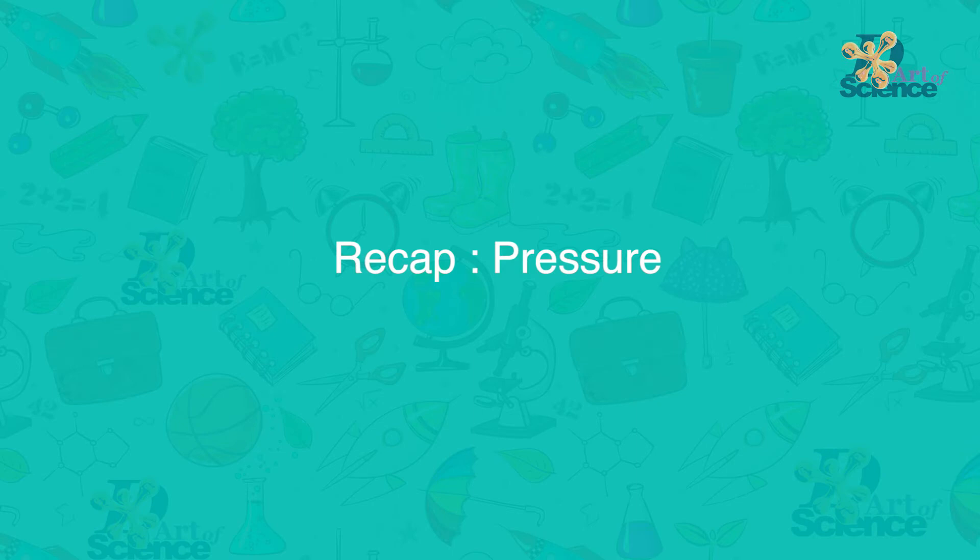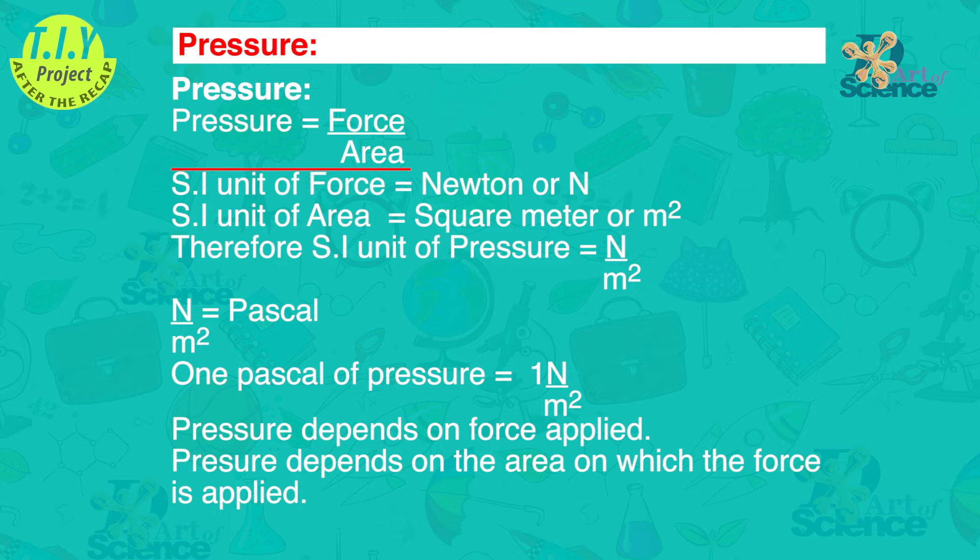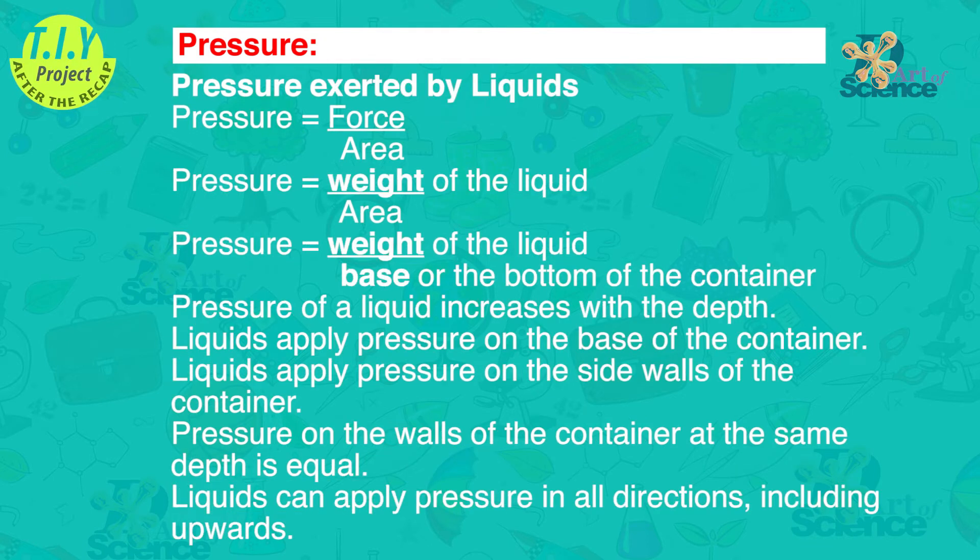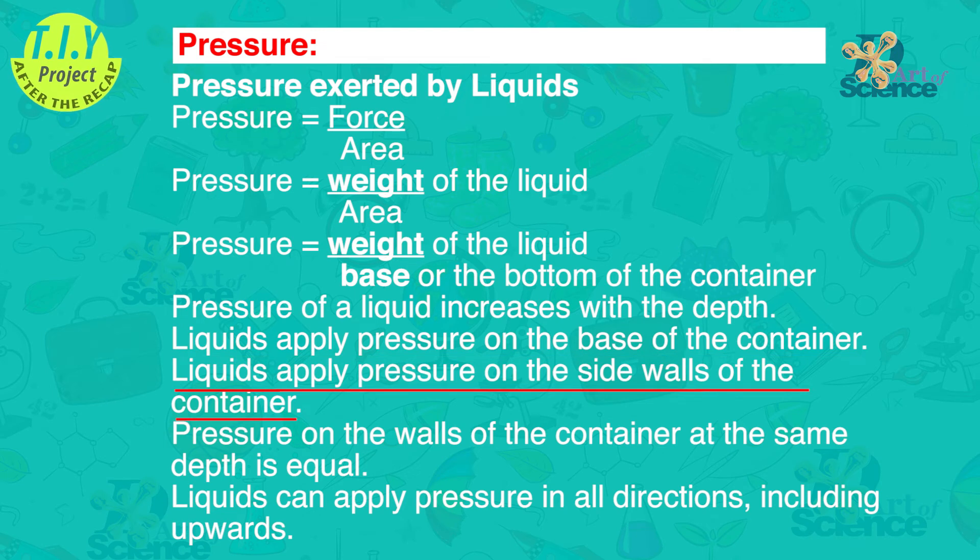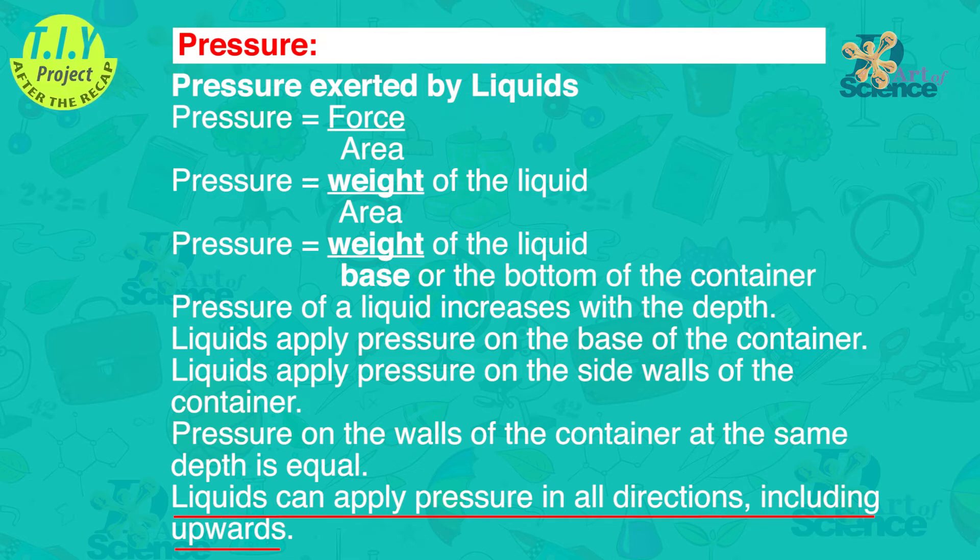That's all on the lesson on pressure in solids and liquids. Let's do a quick recap before we move on to the DIY that you can do as a school project. We learned that pressure is force upon area. The SI unit of force is Newton. The SI unit of area is square meter. Therefore the SI unit of pressure is Newton per square meter. This is also called pascal. One pascal of pressure is one Newton per square meter. The pressure depends on force applied. The pressure depends also on the area on which the force is applied. Pressure exerted by liquids. Pressure is force upon area. Force here is weight of the liquid and the area is the base or the bottom of the container. Pressure of a liquid increases with the depth. Liquids apply pressure on the base of the container. Liquids apply pressure on the side walls of the container. Pressure on the walls of the container at the same depth is equal. Liquids can apply pressure in all directions, including upwards.